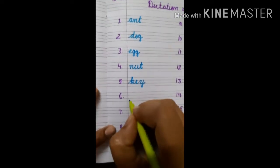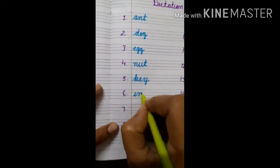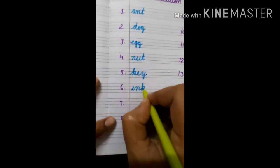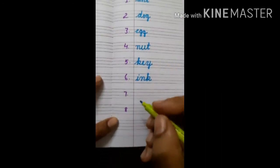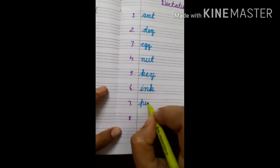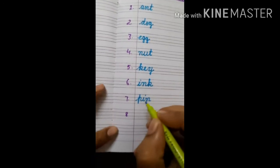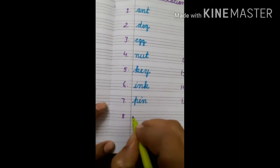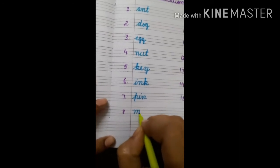Number six: ink - I N K - ink. Number seven: pin - P I N - pin. Number eight: mat - M A T - mat.